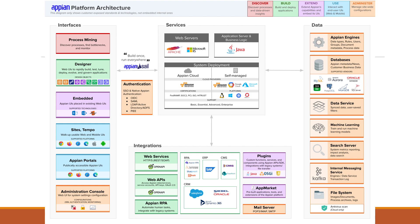In data, we have Appian engines where all Appian services run, along with Appian data types, rules, users, groups, and more. In the database we store all application data. By default, Appian comes with MariaDB already connected, but if we don't want to use that we can integrate with an external database as well.